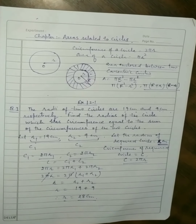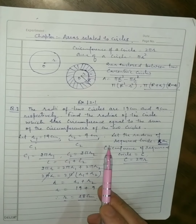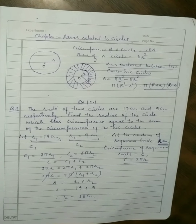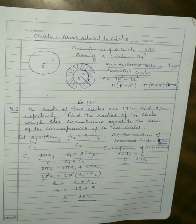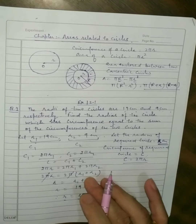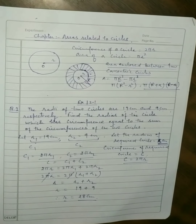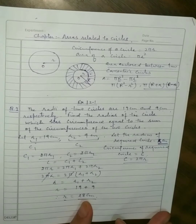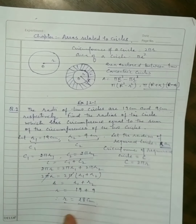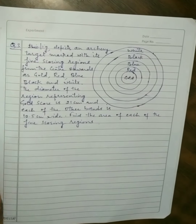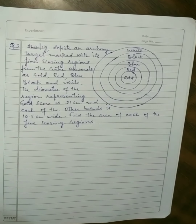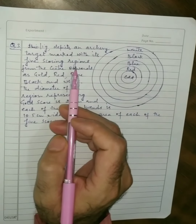Question 2 is similar but involves area instead of circumference — you have to find the radius of a circle whose area equals the sum of the areas of the two given circles. Try to solve Question 2 yourself. Now we will solve Question 3.